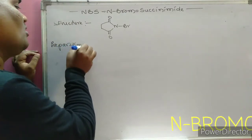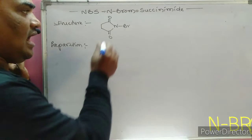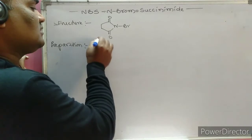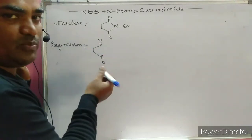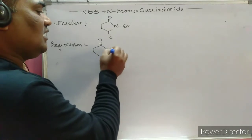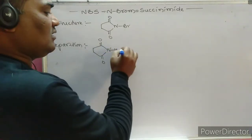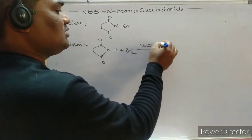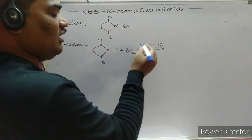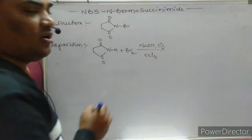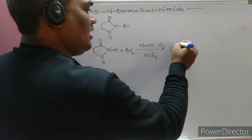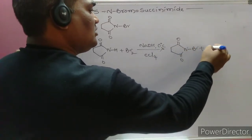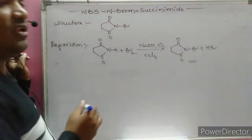The method of preparation involves gradual addition of bromine to an ice-cold solution of succinamide. When OH groups are present it is called succinic acid; when H is present it is called succinamide. The gradual addition of bromine in an ice-cold solution of sodium hydroxide at zero degrees centigrade, or in the presence of a non-polar solvent such as carbon tetrachloride, causes NBS to precipitate out, along with HBr as byproduct.